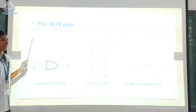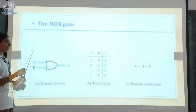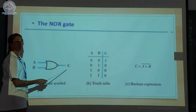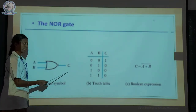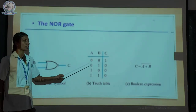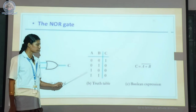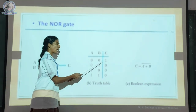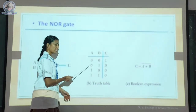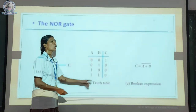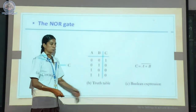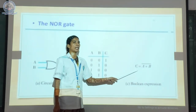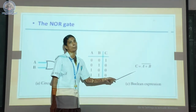The next slide is NOR gate. The NOR gate has two or more input signals producing only one output signal. The combination of four input signals for NOR gate: if both inputs are low, the output is high. If any one of the inputs is high, the output is low. The Boolean expression for NOR gate is C is equal to A plus B, whole bar.